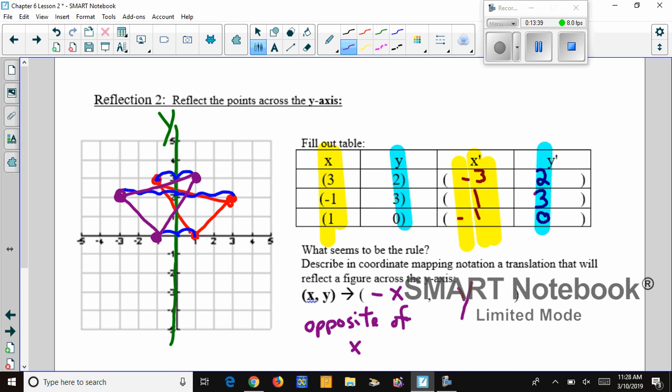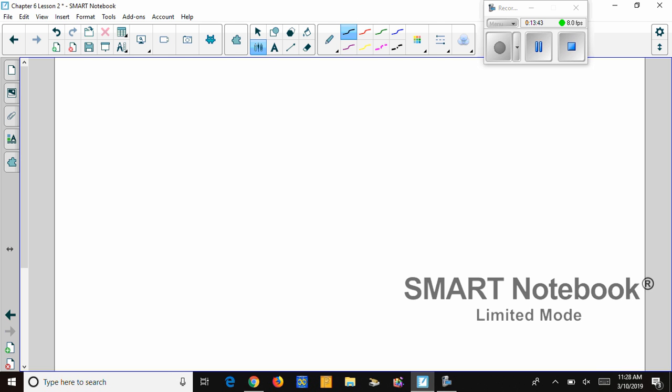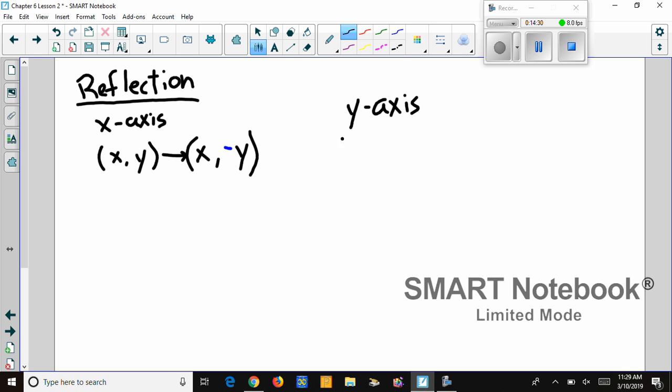So those are our rules. Let's put one more page with a summary of what we found. For a reflection, we are only going to do 2 in our class. We have over the x-axis, and to do that, we have a transformation where we take the original ordered pair (x,y). We keep the x the same, but we find the opposite of y. Our second transformation will be a reflection over the y-axis, and its rule is we take our (x,y), we find the opposite of x, and leave y the same.